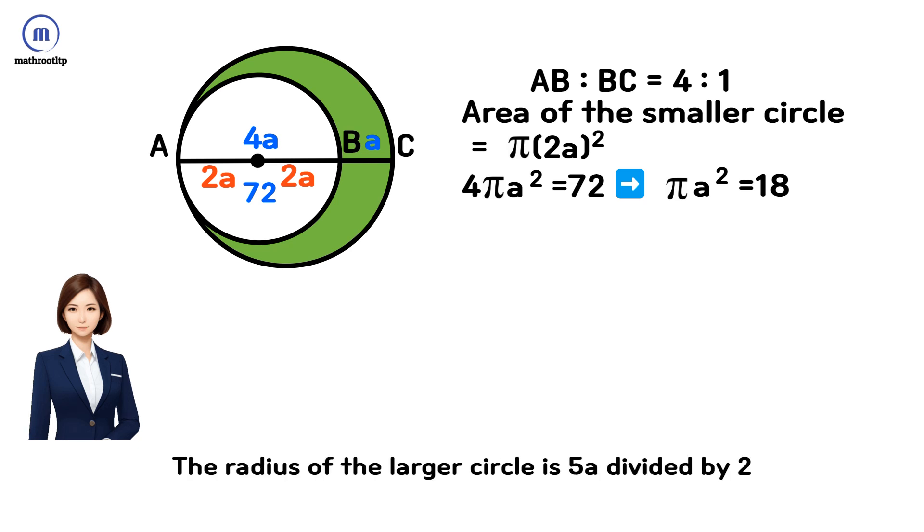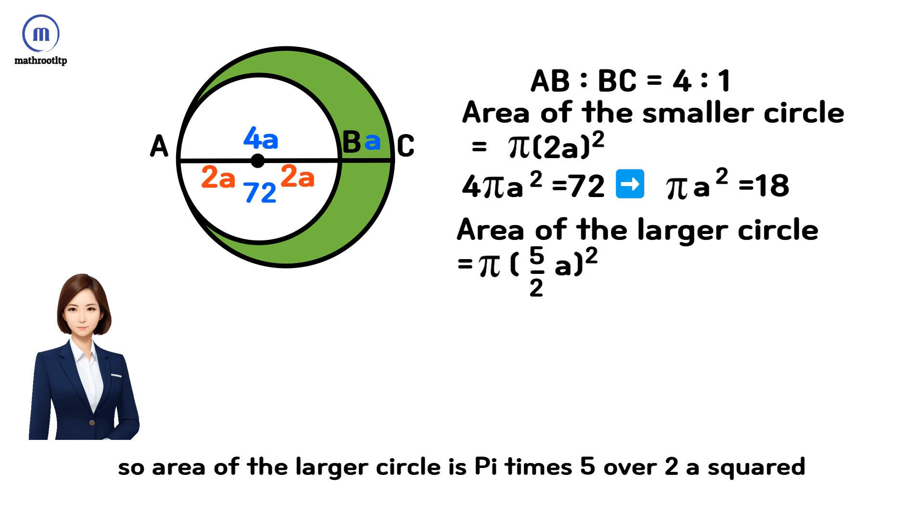The radius of the larger circle is 5a/2. So the area of the larger circle is π(5a/2)².